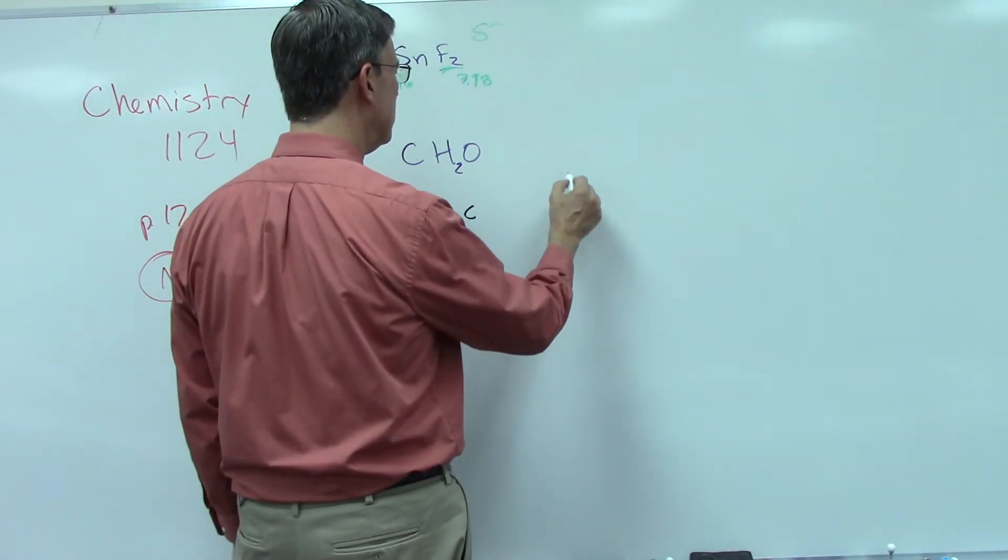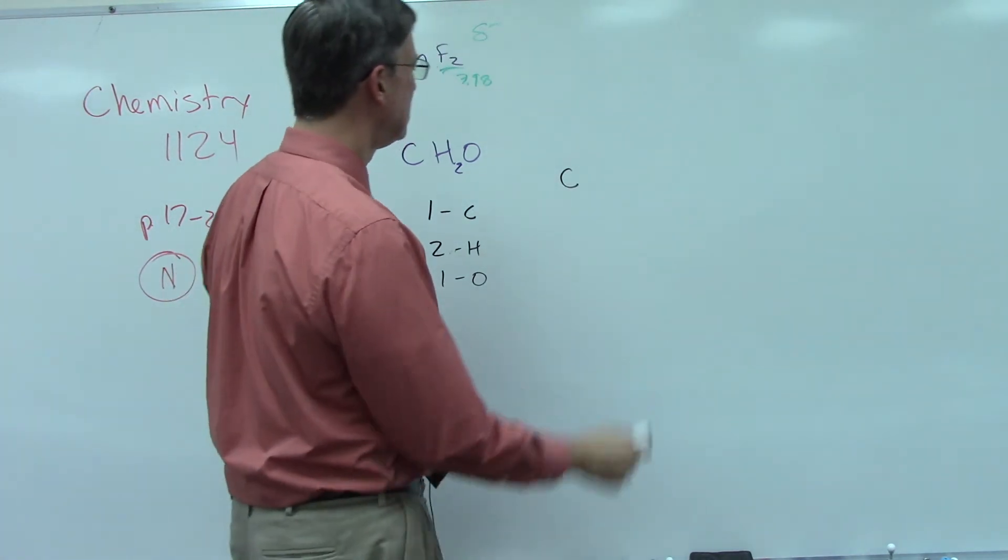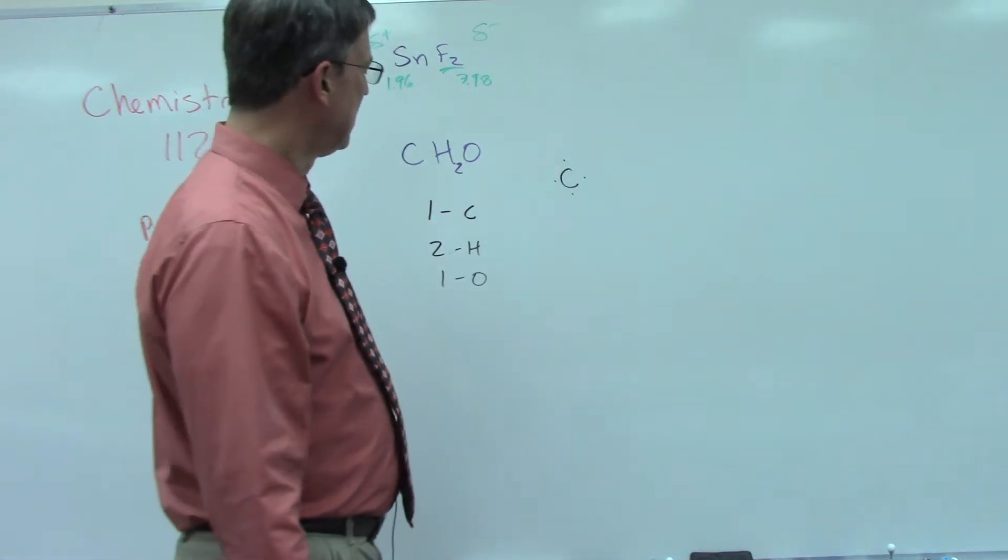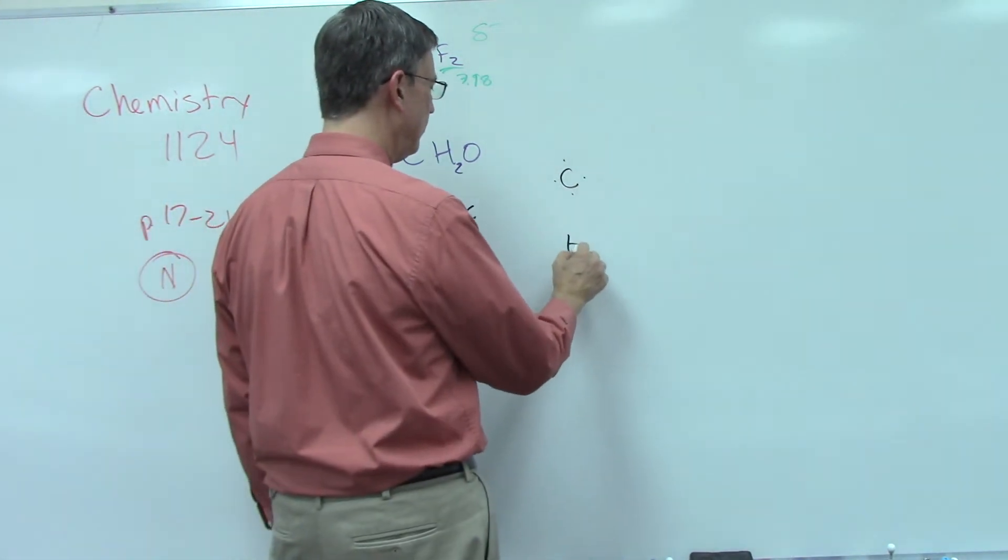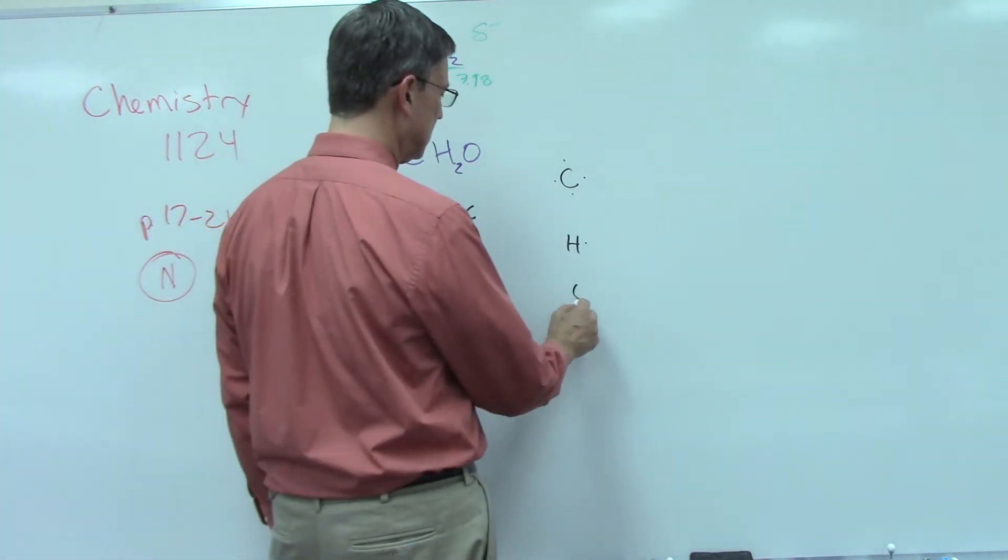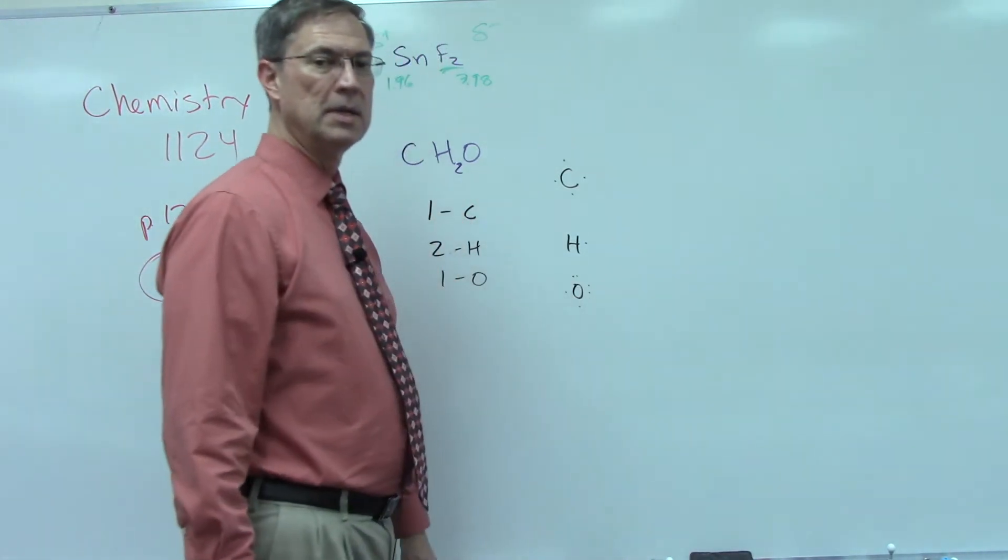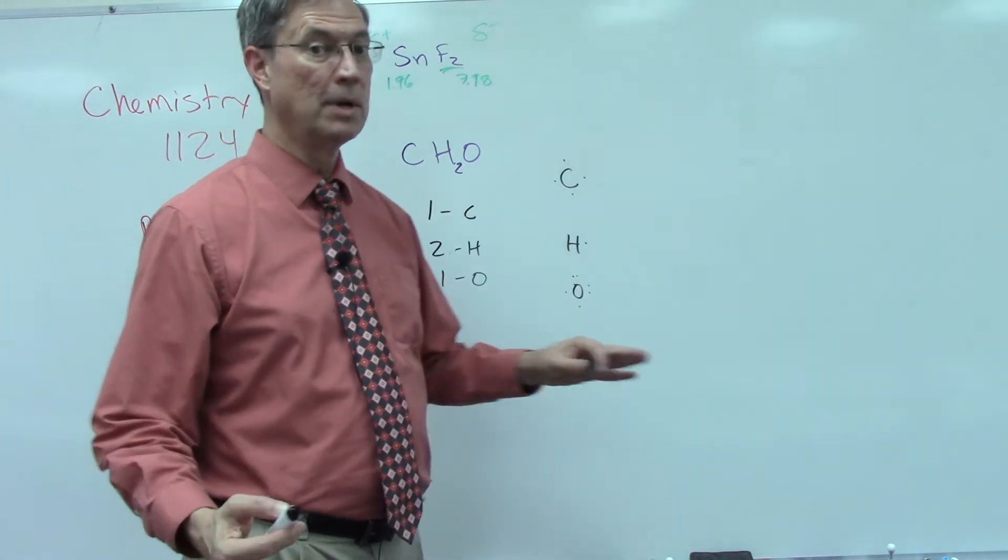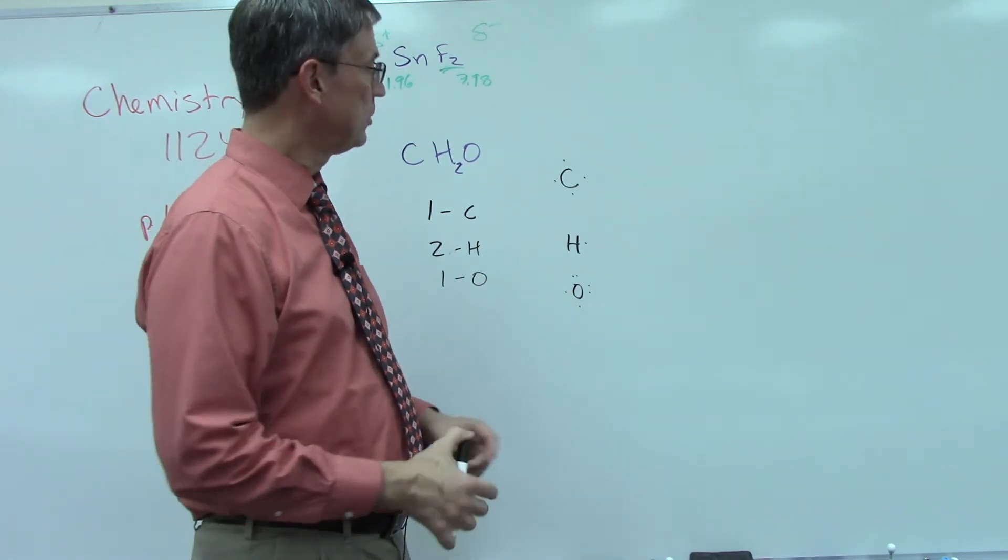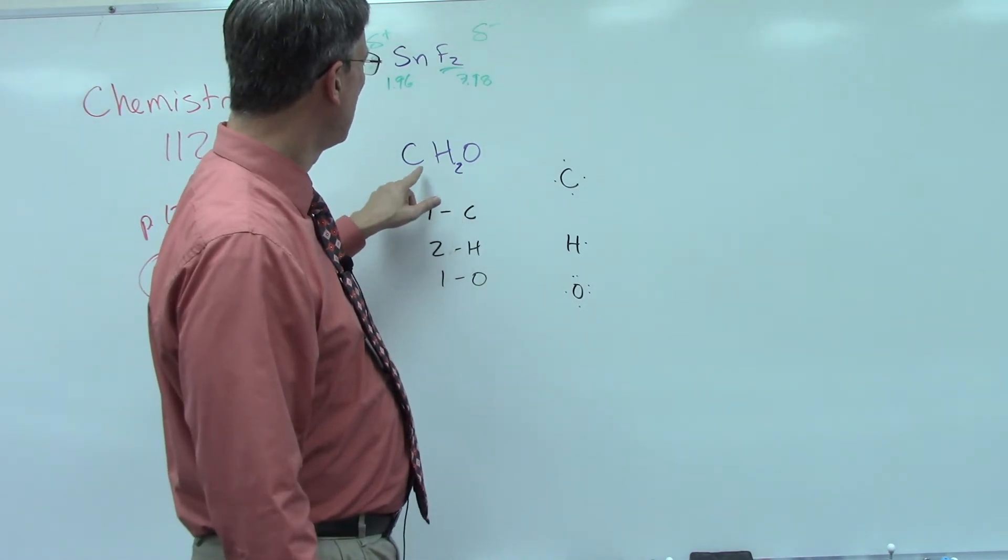We're going to draw what those elements look like with their electron dots. Carbon has four electrons, one on each side. Hydrogen only has one electron, and then oxygen has six—one, two, three, four, five, six electrons. Remember that the magic number is eight. They want to have eight electrons in their outer shell, but they can share electrons. The clue they give us is that carbon is going to be in the middle.